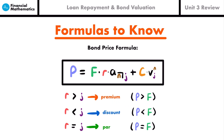You can compare the coupon rate and yield rate to determine if a bond is bought at a premium, discount, or at par. Par value means price equals face amount; discount means price is less than face amount; premium means price is greater than face amount. If the coupon rate exceeds the yield rate, you have a premium bond; if the coupon rate is less than the yield rate, it's a discounted bond; if they're equal, the bond is priced at par.